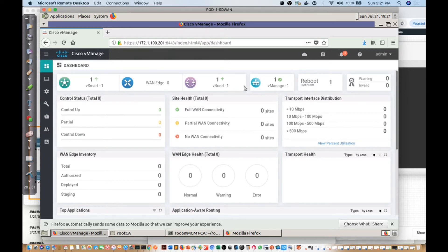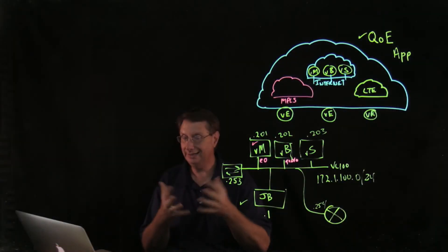Here I have my vManage, my vBond, and my vSmart. So we have all three of our controllers that are now green with little up arrows next to them, and everything is going to be working the way I want and need it to function.